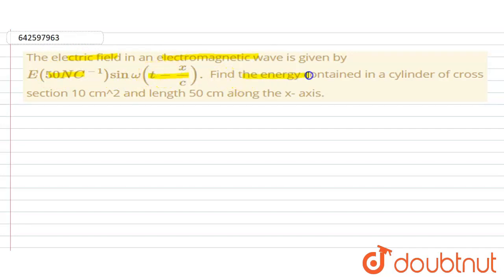Find the energy contained in a cylinder of cross section 10 cm² and length 50 cm along the X-axis.